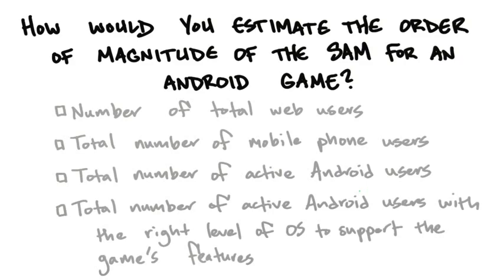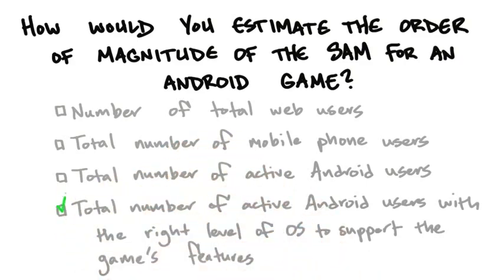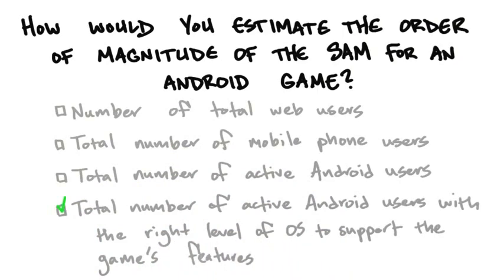But if we get a little more sophisticated, we'd understand that the real answer is number four. It's not only the total number of active Android users, but they need the right level of the operating system to support your particular game's features. And so you really want to get the SAM as tightly defined as you can.